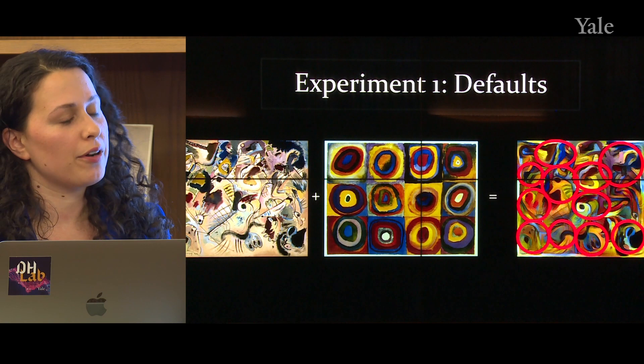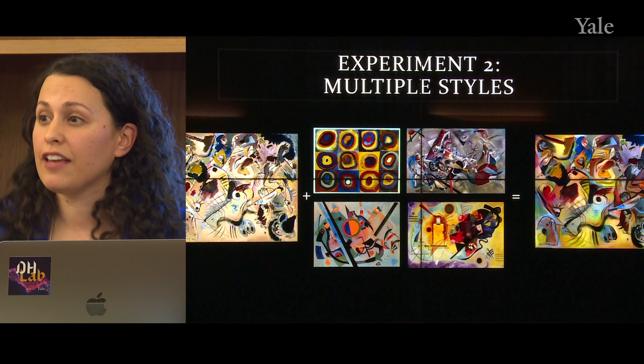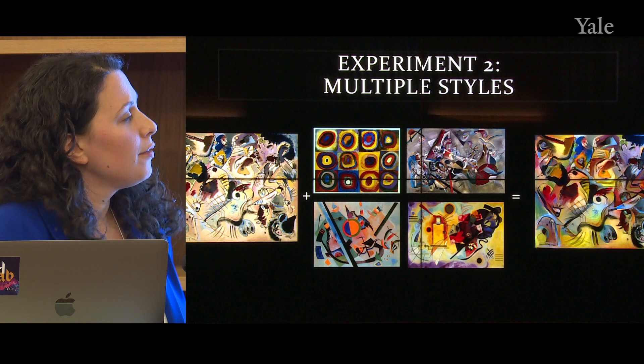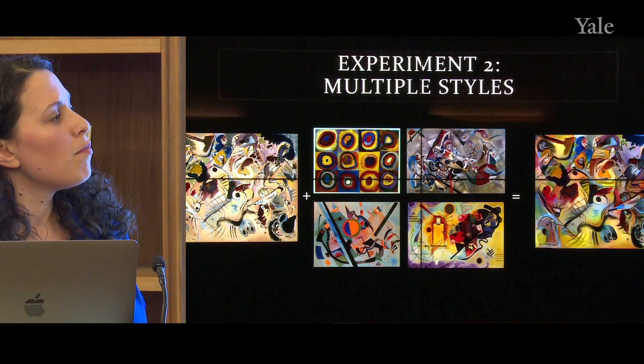What we could start doing is have more than one style. In this case, we're taking four Kandinsky paintings as our style input. By default, all of those style images are equally weighted, but you can adjust that. And so what you're seeing is we're starting to see a little bit more variation now in terms of the final output color — it's starting to look a little different, but the content is still really the same.